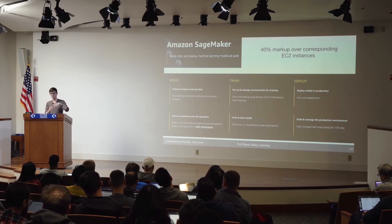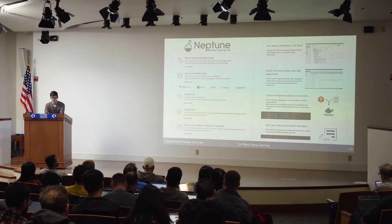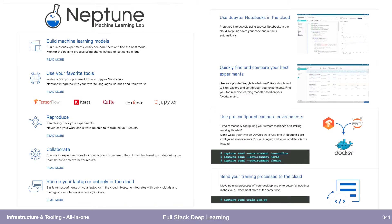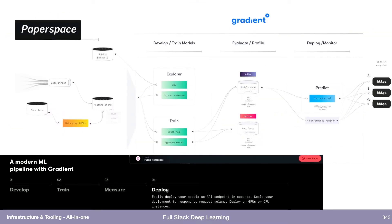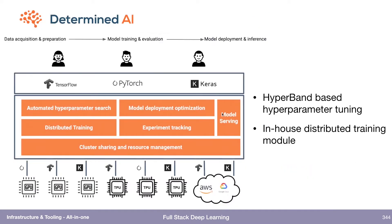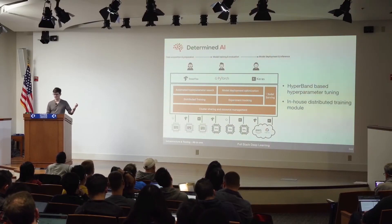In return for the SageMaker markup, you get a notebook that's easier to start, tracked experiments, and a pre-configured instance. There are also startups doing the same thing: Neptune ML, Floyd Hub — Jupiter notebook with zero-setup deep learning — Paperspace Gradient with the same develop-to-train-to-measure-to-deploy flow. Determined AI, a startup from Berkeley, started on-prem but now supports the cloud. They have state-of-the-art hyperparameter tuning using Hyperband — one of the founders wrote the Hyperband paper — and in-house distributed training wrappers that reportedly outperform PyTorch and TensorFlow's built-in options.